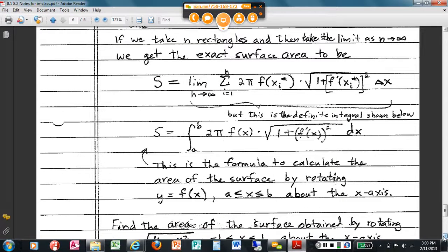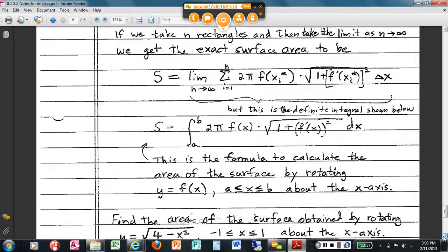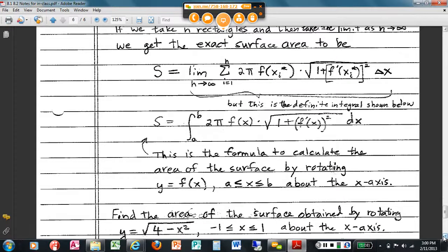It's the integral of two pi f of x, one plus f prime of x sub i, squared, delta x is dx. Here it is. Surface area of, circle this one. Surface area of a solid generated by rotating about an axis, or the x-axis, I guess it is, from a to b, is two pi f of x, square root. Now, this is the arc length, the arc length formula, dx. That's how we get surface area.